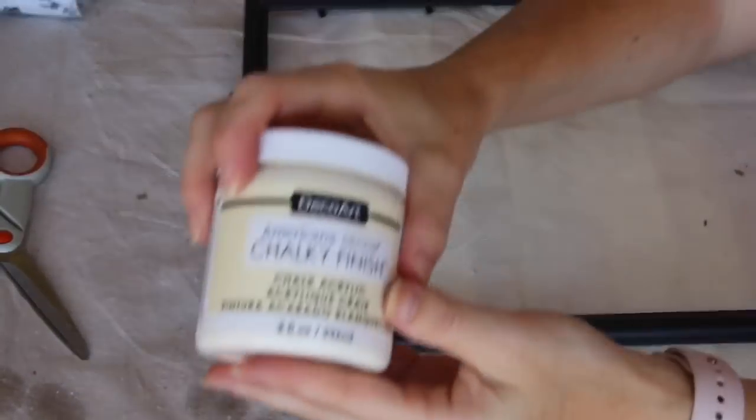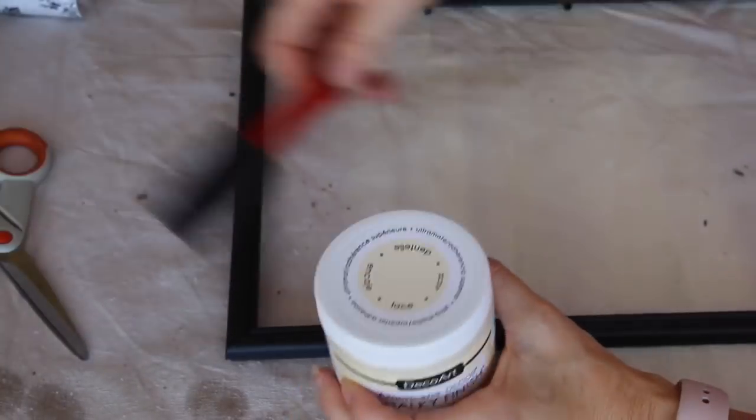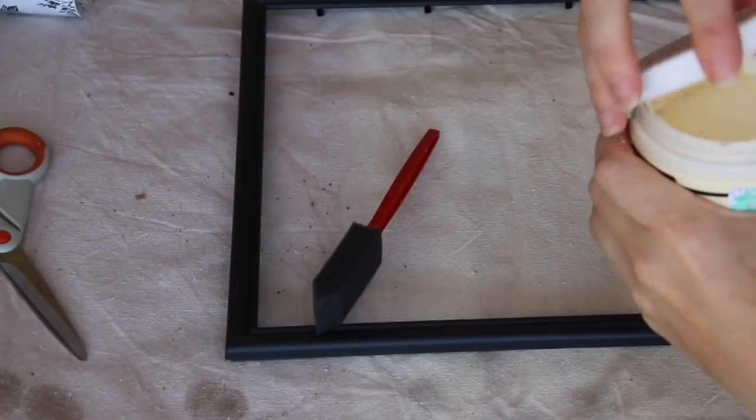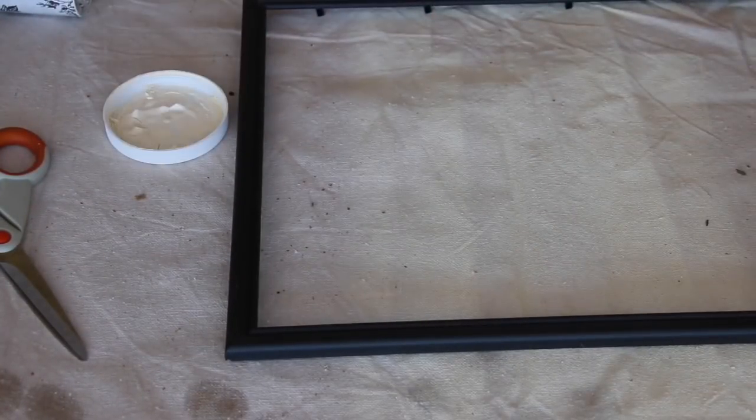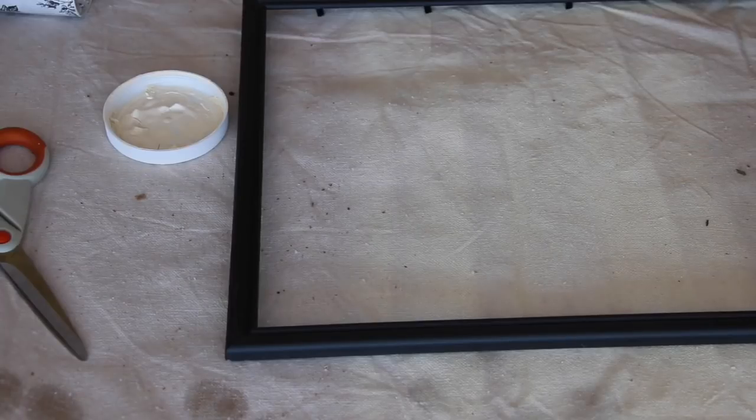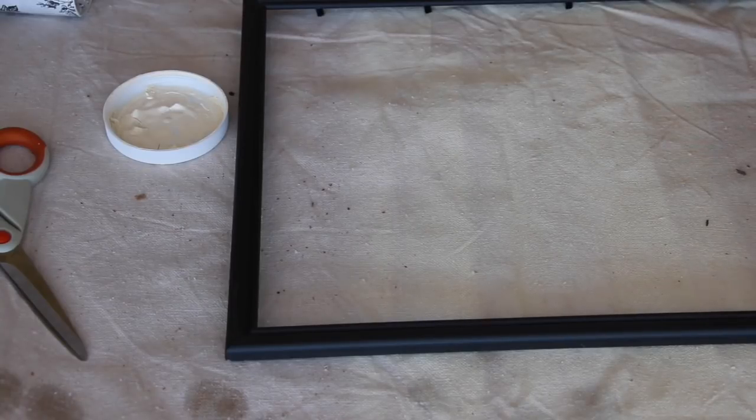Now I'm going to take this chalk paint and I'm going to paint the frames. Now my paint is a little bit thick. I'm pretty sure that's not the way it came, but I'm not an expert, so I just mixed it up and it worked just fine. You're going to paint all three frames.